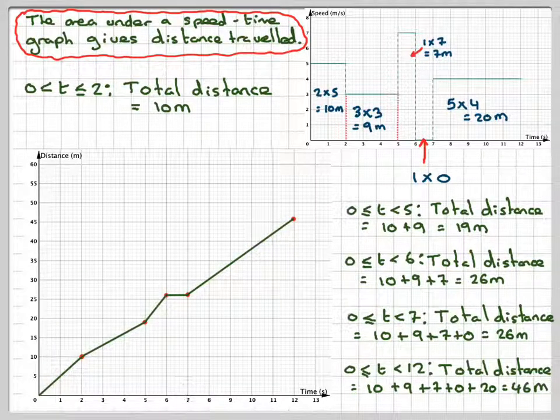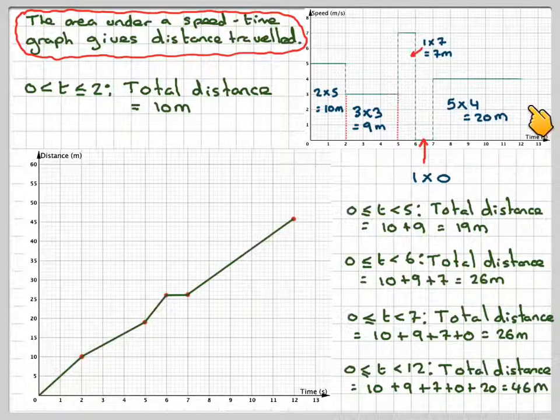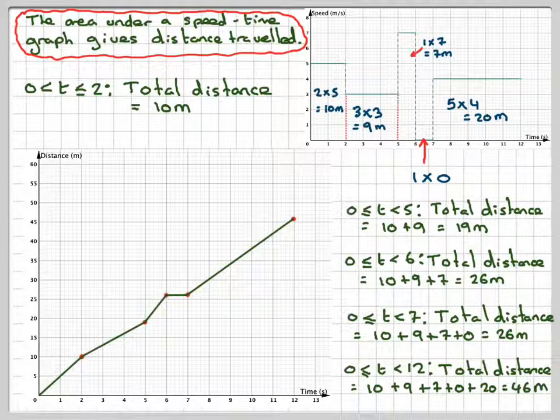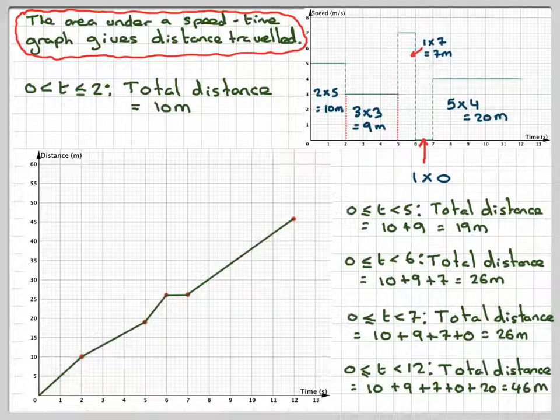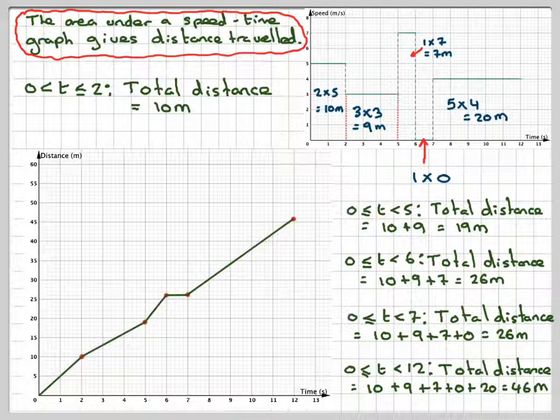So here we have the resulting distance-time graph from this speed-time graph. This has been a video to show you how to draw a distance-time graph from a speed-time graph. I hope you've understood, and thank you very much for watching.